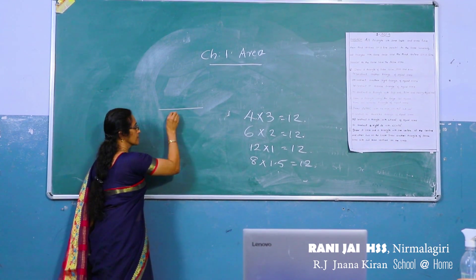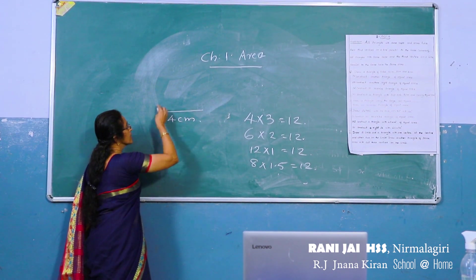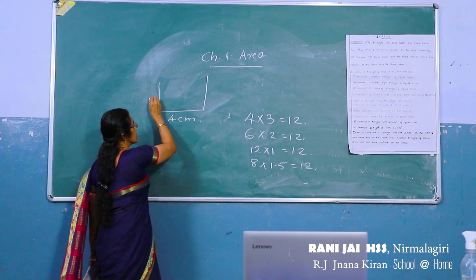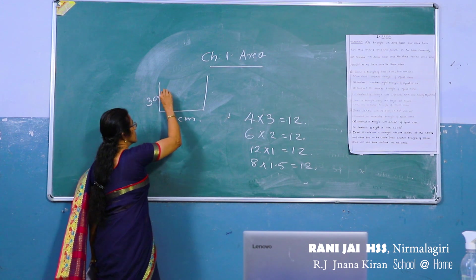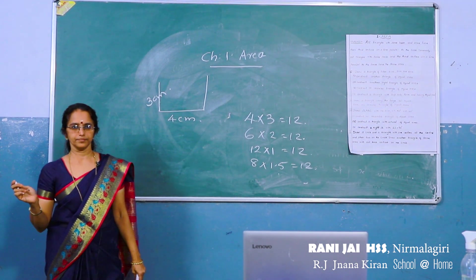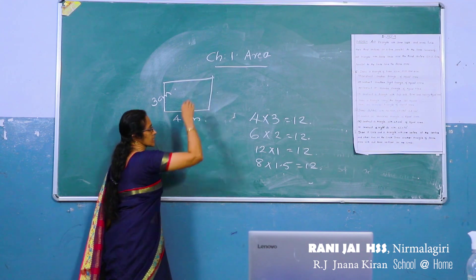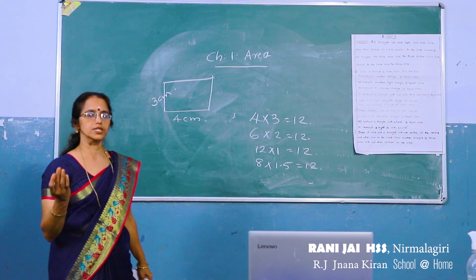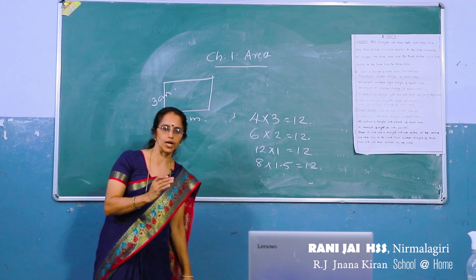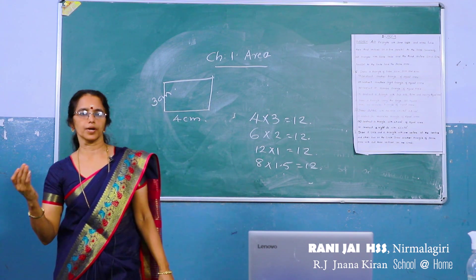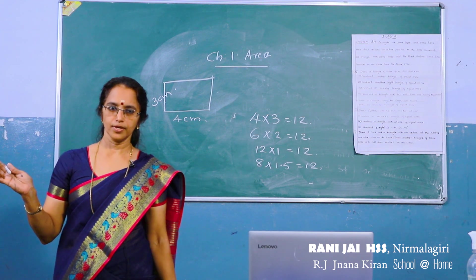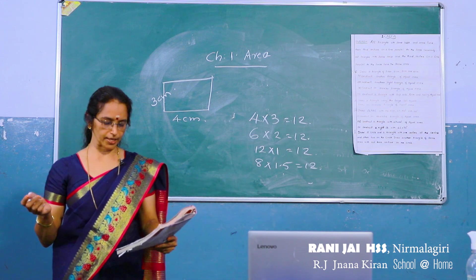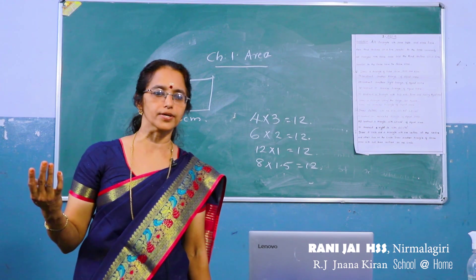First draw 4 cm. At 90 degrees, draw the breadth. Then on the breadth, we can mark 3 cm. Now join the rectangle. Similarly, we can draw rectangles for 6 into 2, 12 into 1, and other factor pairs to get different types of rectangles. This is in your textbook page number 7. There are different types of rectangle which you already studied.